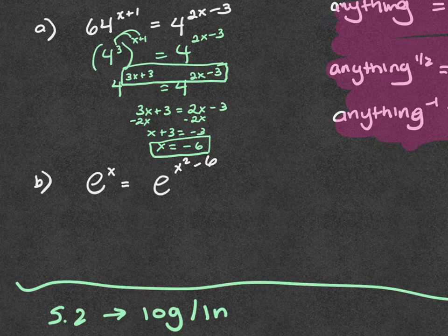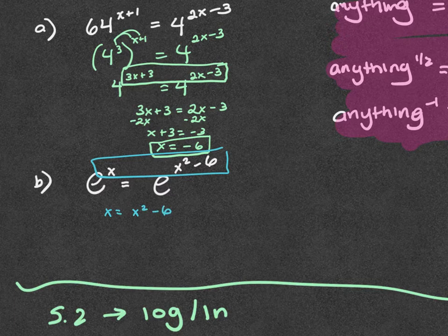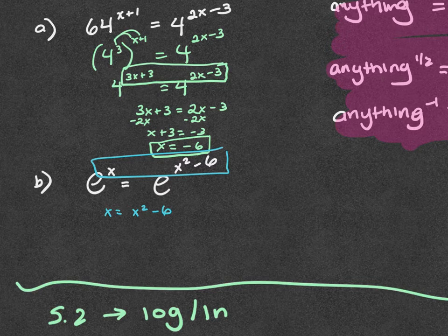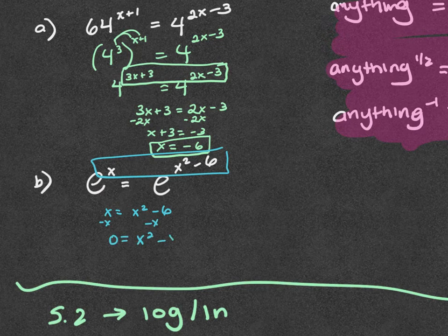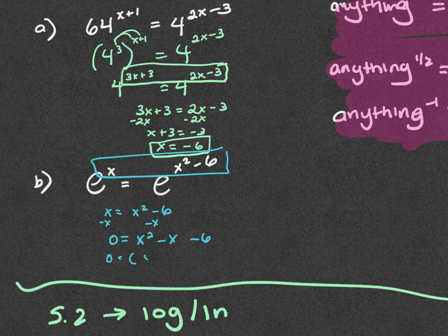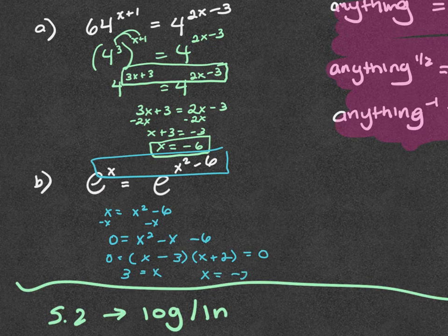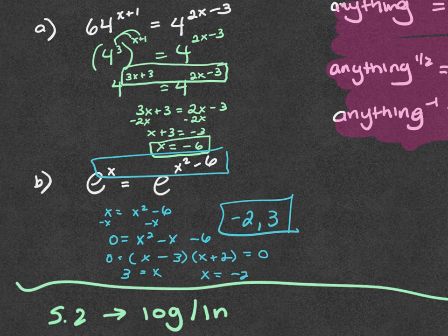For e to the x equals e to the (x squared minus 6), the bases are already the same, so set the exponents equal: x equals x squared minus 6. As soon as you see a squared and a non-squared x, that's your indication you'll need to factor. Get everything to one side: 0 equals x squared minus x minus 6. Factor: what are factors of negative 6 that sum to negative 1? Negative 3 and positive 2. Set each equal to zero: x equals 3, x equals negative 2.